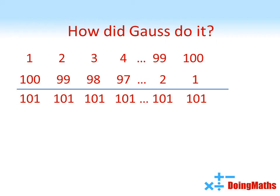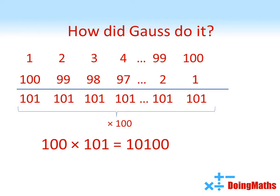Now, because we're adding together the numbers from 1 to 100, that means we've got 100 lots of this 101. So if we multiply them together, we get 10,100.